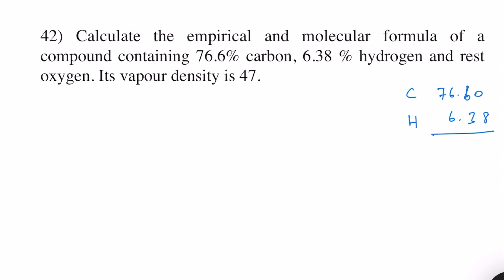This means first we need to sum up the percentage of carbon and hydrogen. This will be 82.98%. If we subtract this value from 100, then we can find out the percentage composition for oxygen, and therefore oxygen is 17.02%.